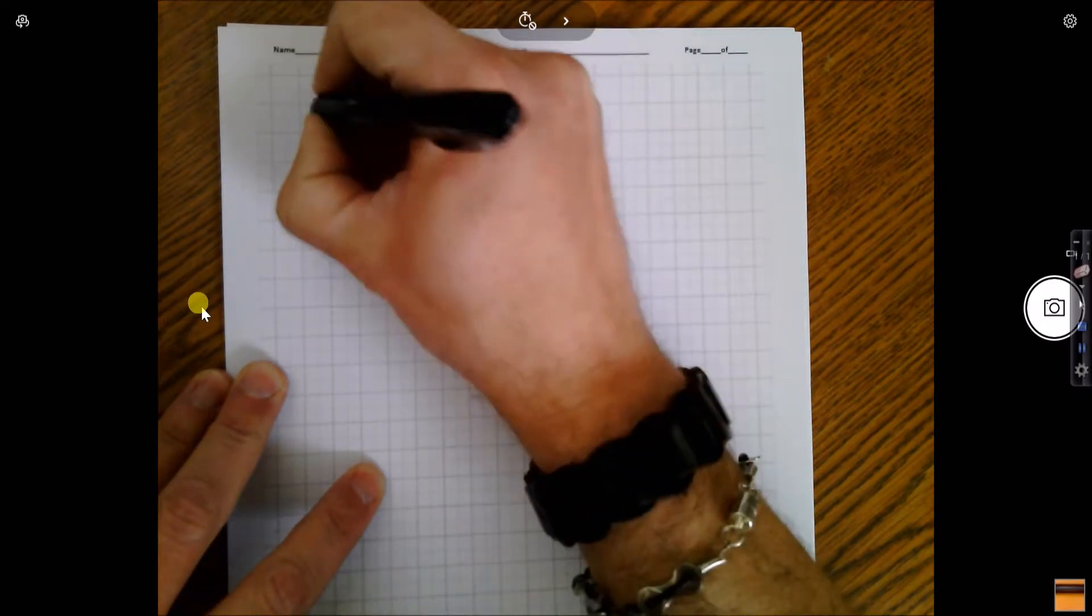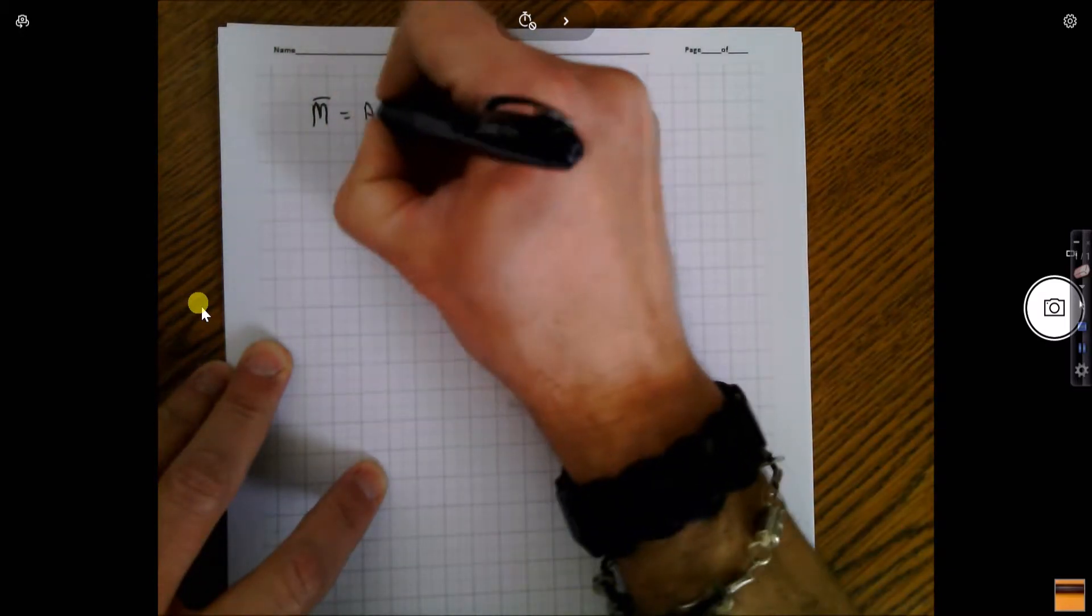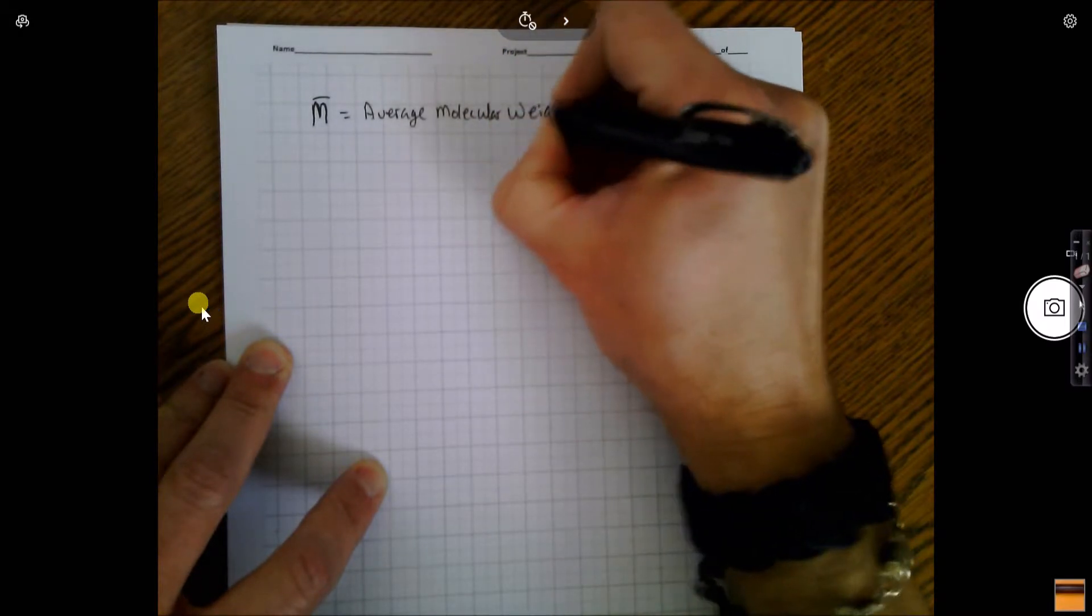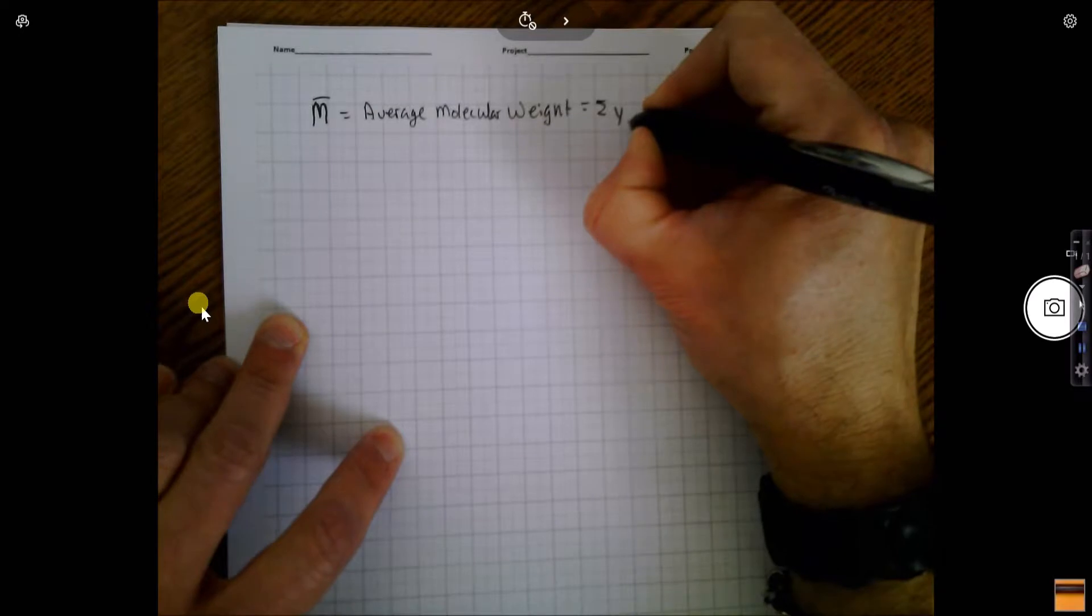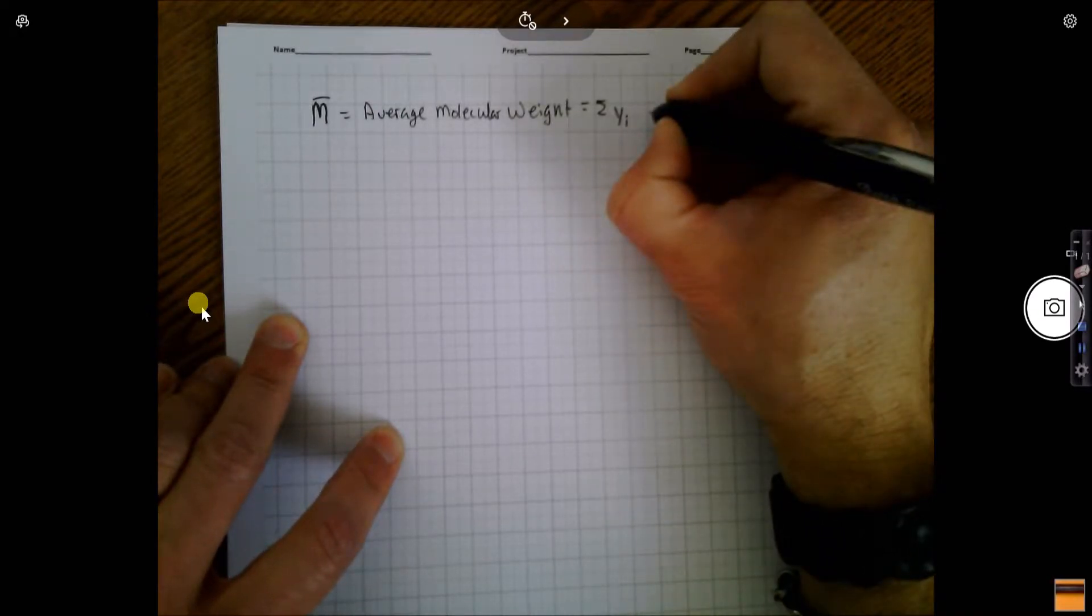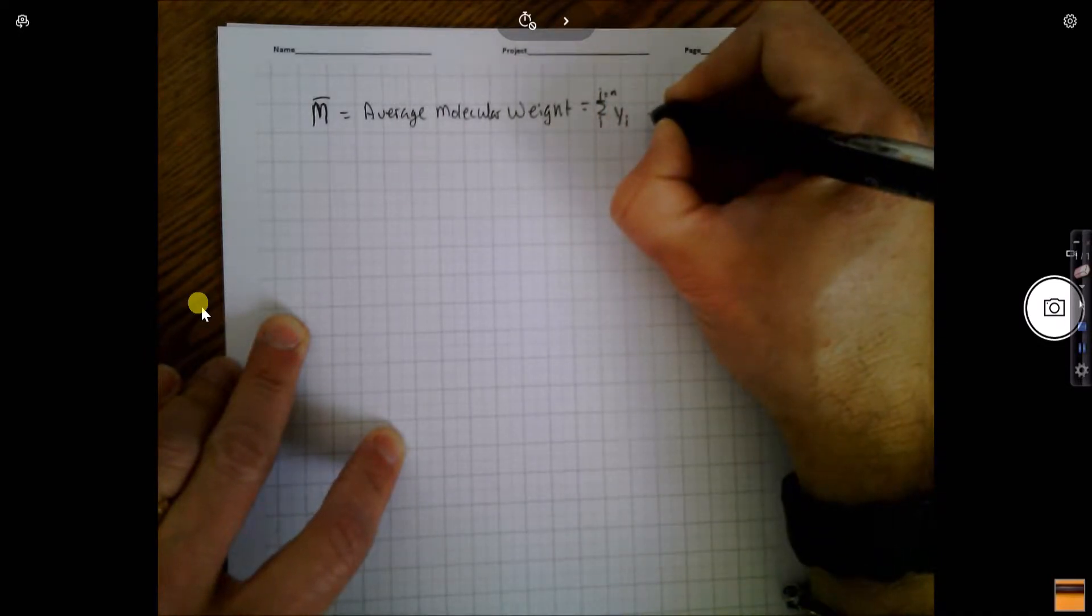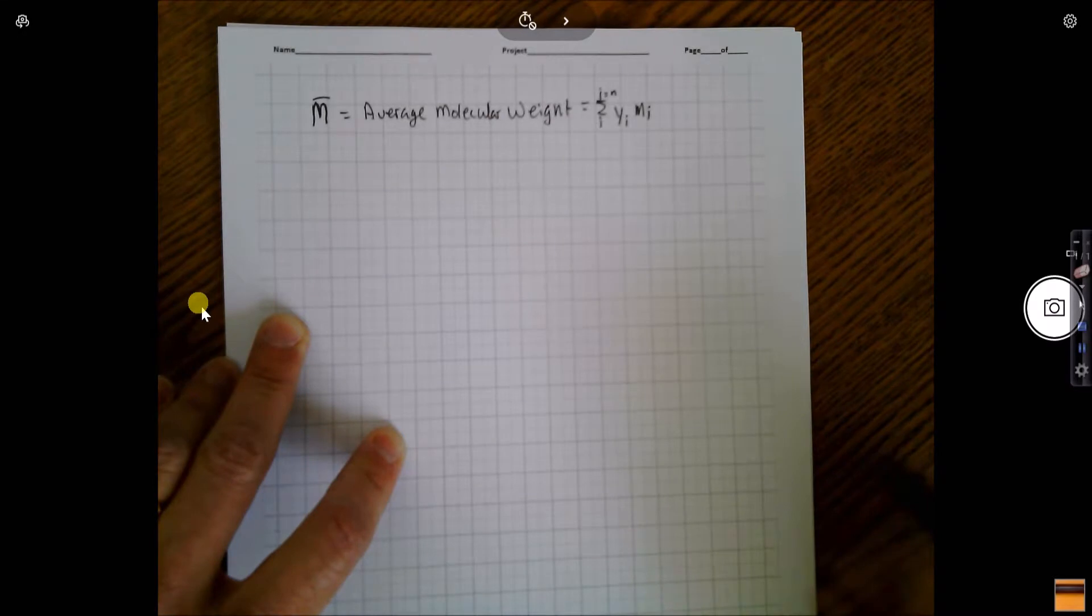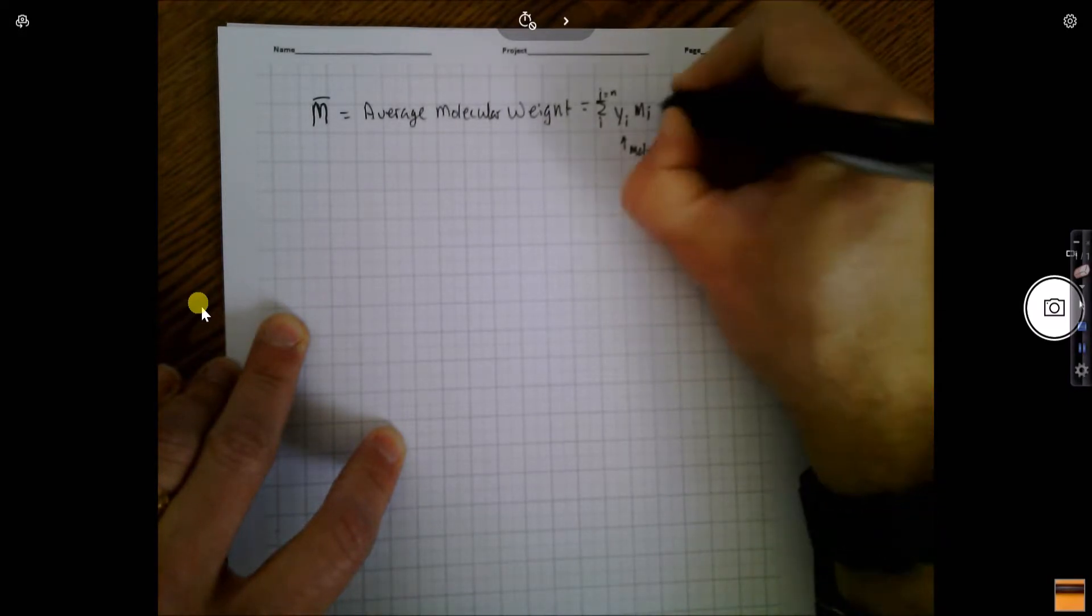Average molecular weight is denoted by the symbol M with a bar over it, capital M-bar. That is the summation of the mole fraction of what you have, times the molecular weight of an individual species. So the mole fraction times the molecular weight.